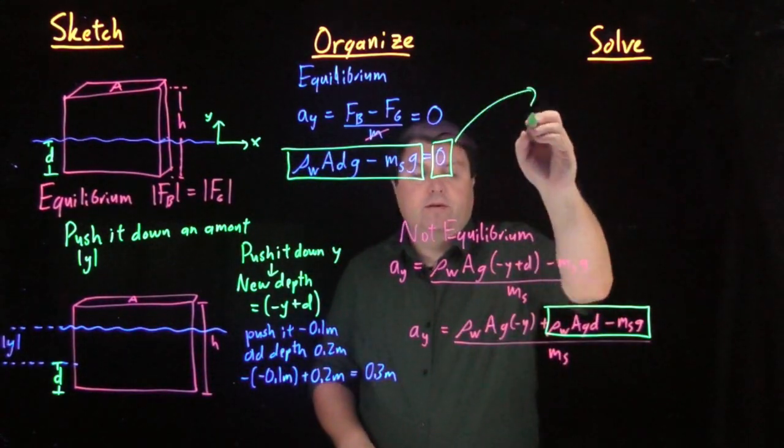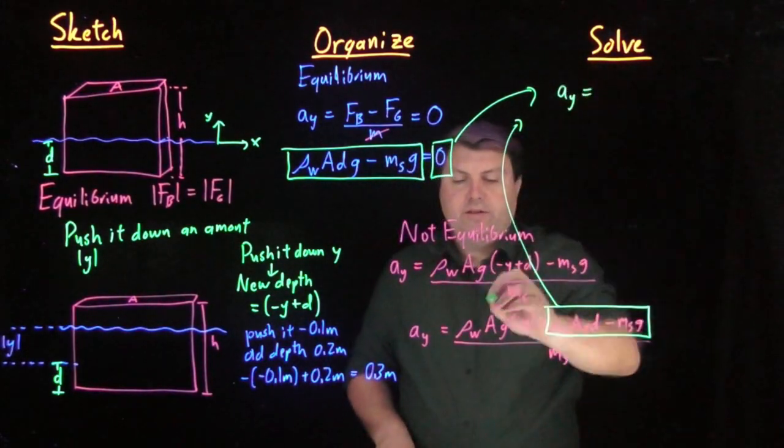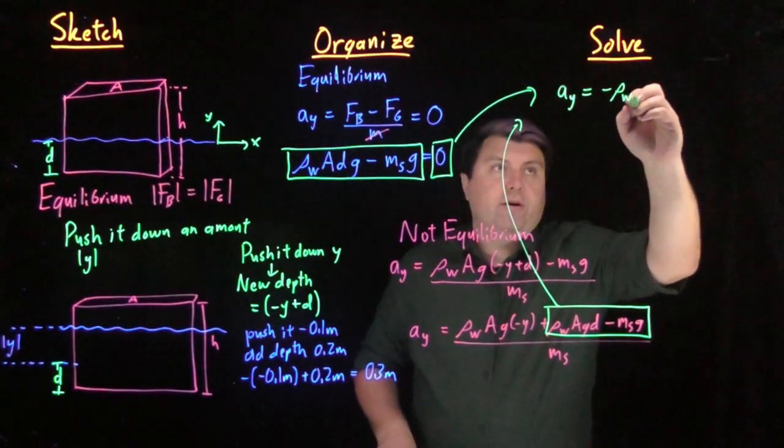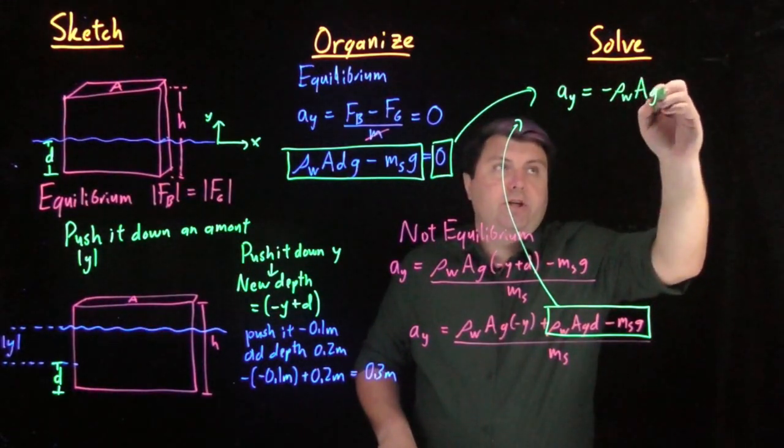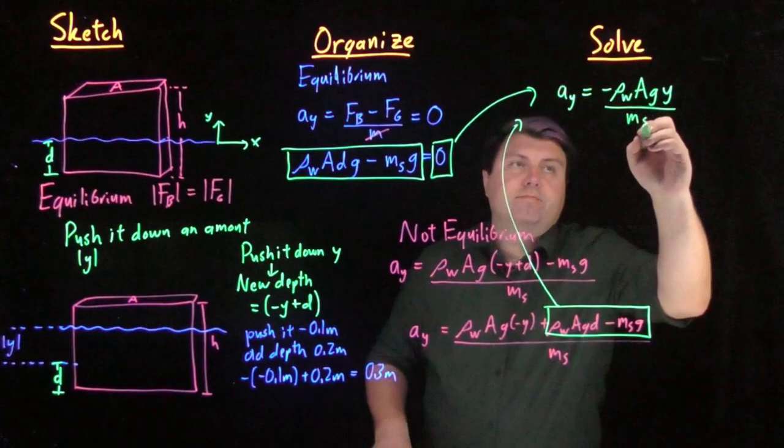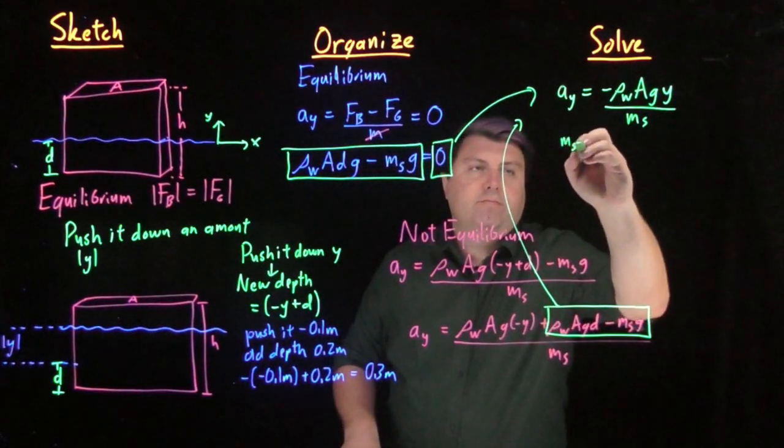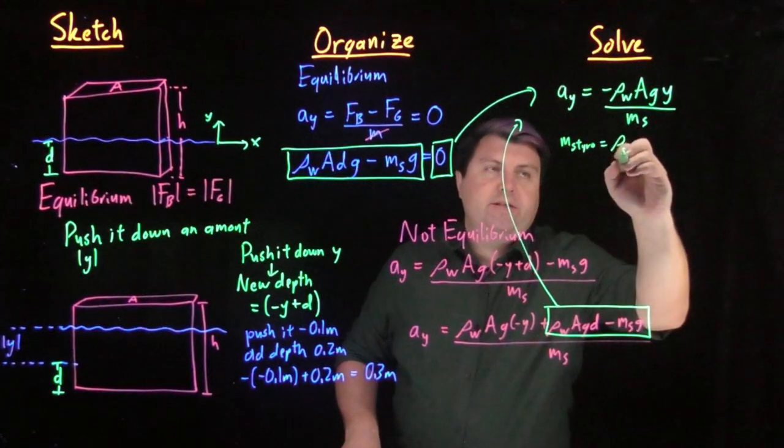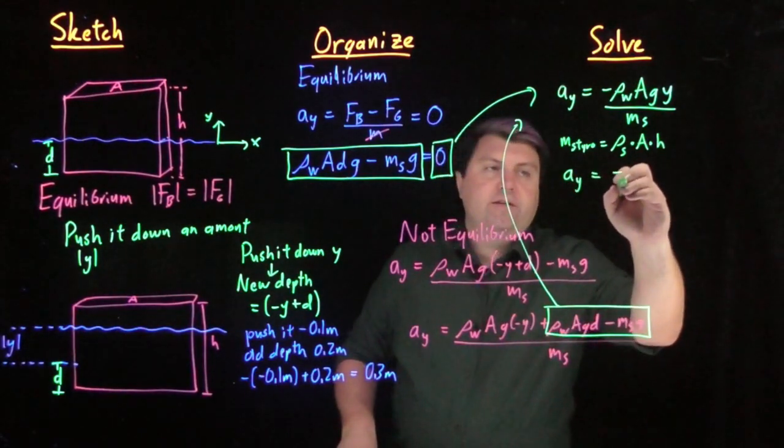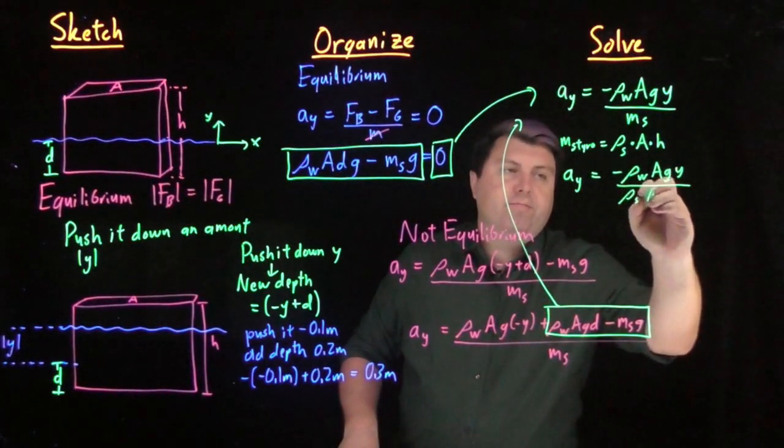So now in my solve step, I can use this information, and now I have my acceleration in the y: negative ρ_w A g times the magnitude of what I pushed it down over the mass of the styrofoam. And in fact if I care, I can represent the mass of the styrofoam as equal to the density of the styrofoam times its area times its height. So I can say my acceleration of the y is negative density of the water, area, g, y over density of the styrofoam, area, height.